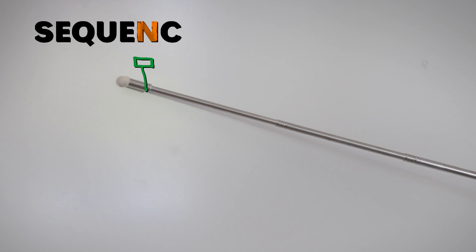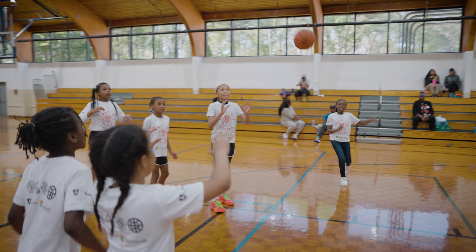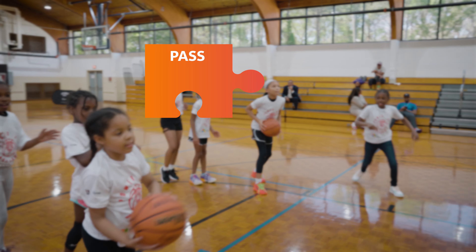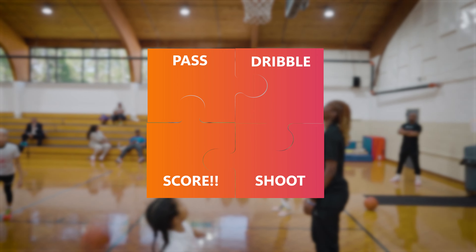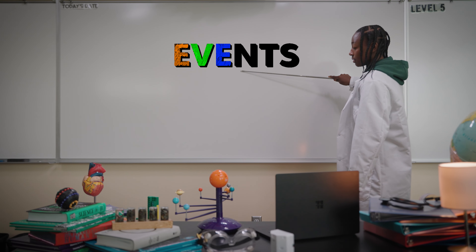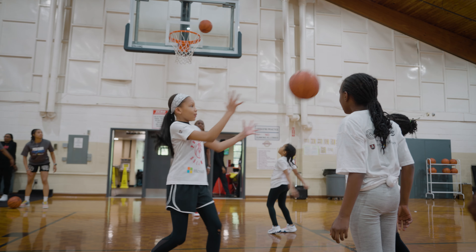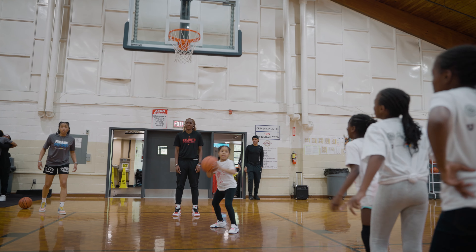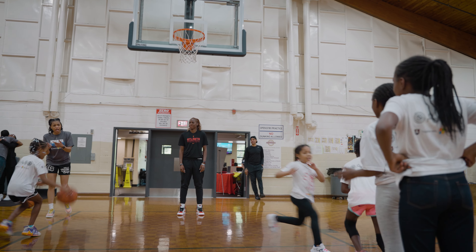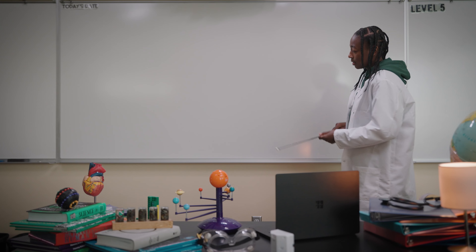Here's the lingo. Sequences — think of them as ordered steps, like pass, dribble, shoot, in exact order. Events are actions that trigger other actions. Imagine passing the ball and suddenly your teammate shoots. Boom! Event.